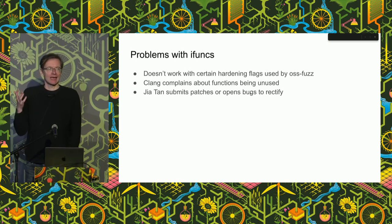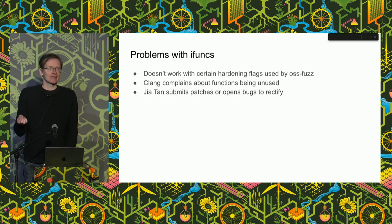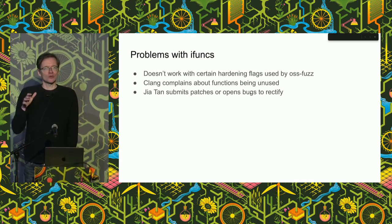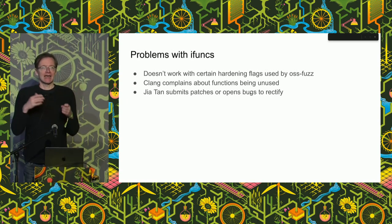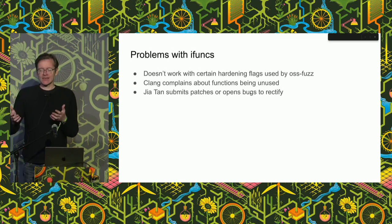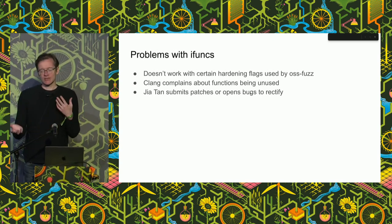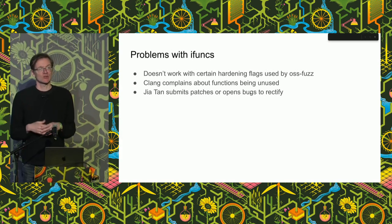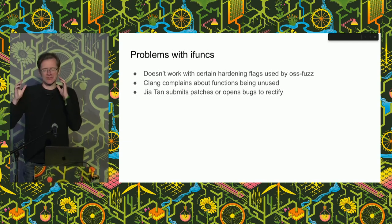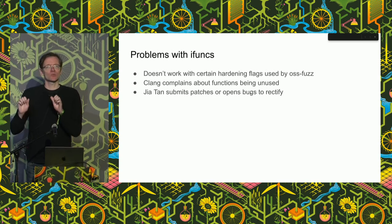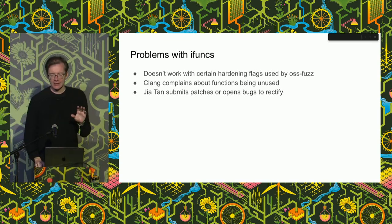There are a few things ifunks have difficulty with. They don't integrate well with some debugging parameters often used by fuzzing programs. Clang, the LLVM-based C compiler, sees that a function is defined but never directly called because the runtime dynamic linker does magic, and Clang complains: 'there's a function here that's never used — is that deliberate?' These aren't big issues. The fuzzer's failure to work with ifunk things is expected due to how OSS-Fuzz works. Clang complaining about it is basically cosmetic. Jia Tan submitted patches that rectified these things. To be clear, these patches were fixing legitimate issues — which made it less obvious that anything weird was going on.